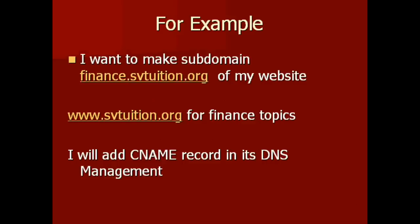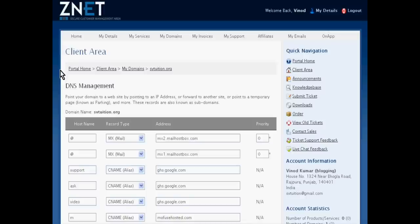For example, I want to make the subdomain finance.svtushin.org of my website www.svtushin.org for a finance topic. I will add a CNAME record in its DNS management. I registered my domain in Gnet, and after login I will go to My Domain and then to DNS Management.